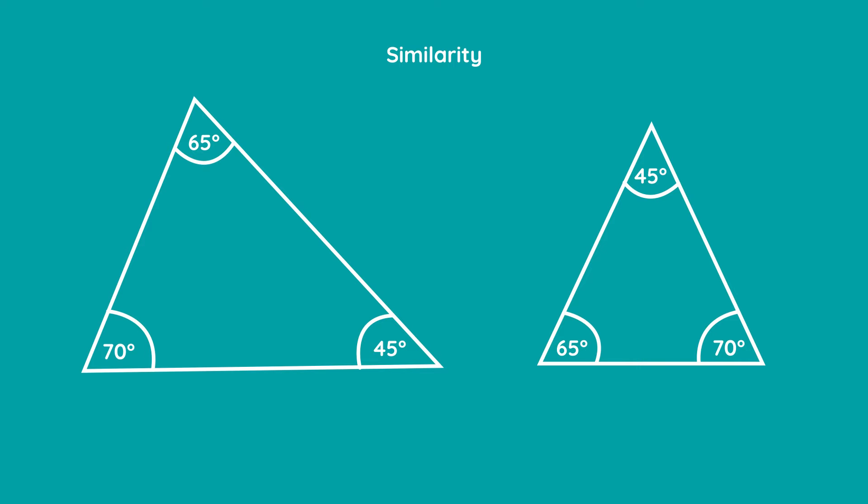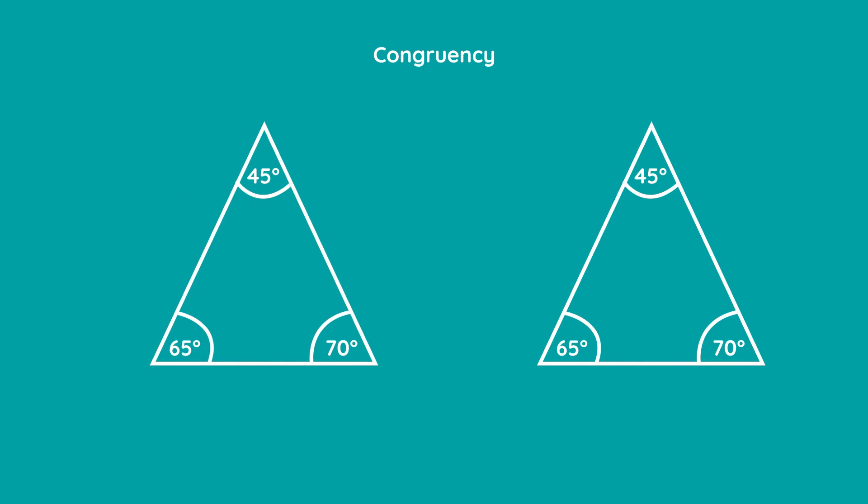And just in case you get mixed up between similarity and congruency, congruency is when two triangles are identical in every way including side lengths, and similarity is just when they have the same angles. So you could say that if two triangles are congruent they're definitely similar, but if they're similar they're not necessarily congruent and in fact most of the time they won't be.